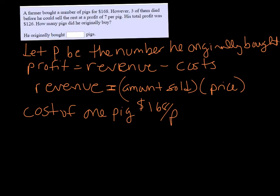And in our revenue equation, the amount sold would be however many he had to start with minus three because three of them died, and then the price. We know that he sold each one at a profit of $7, so it's whatever he paid, which is $168 over P, plus 7.